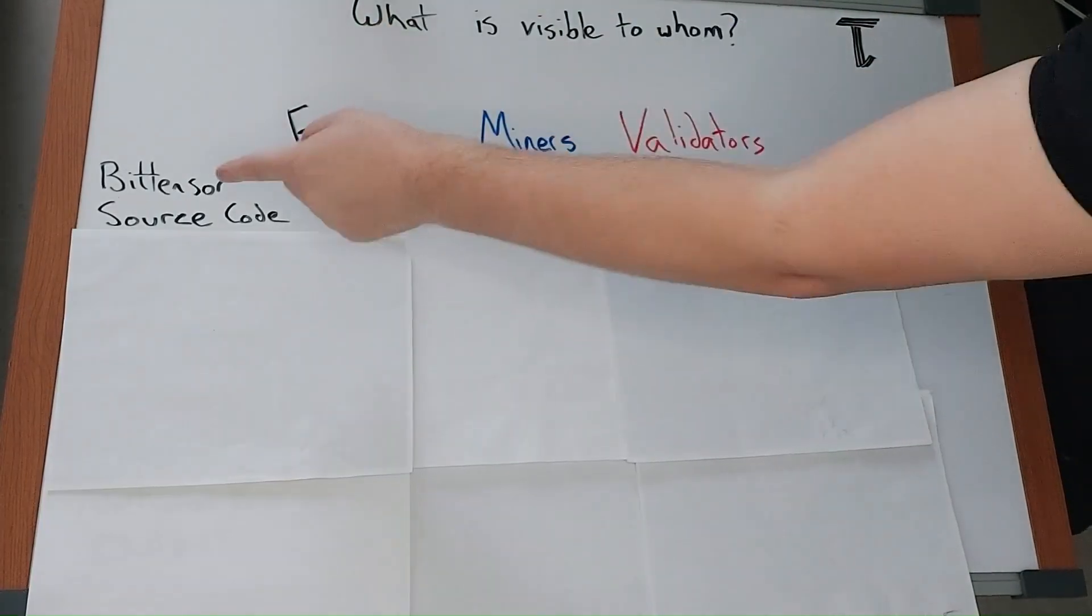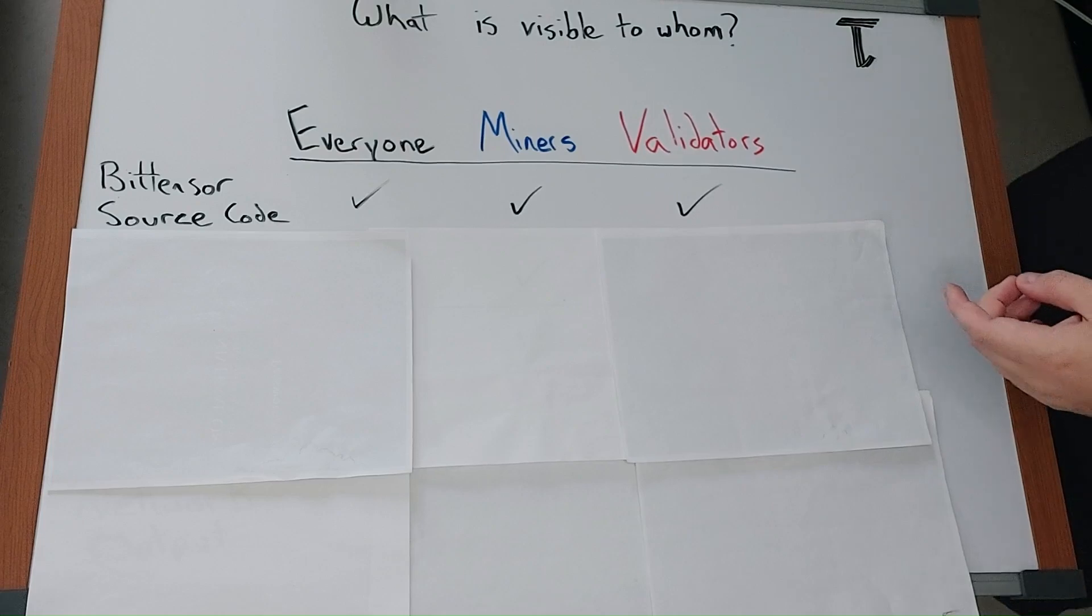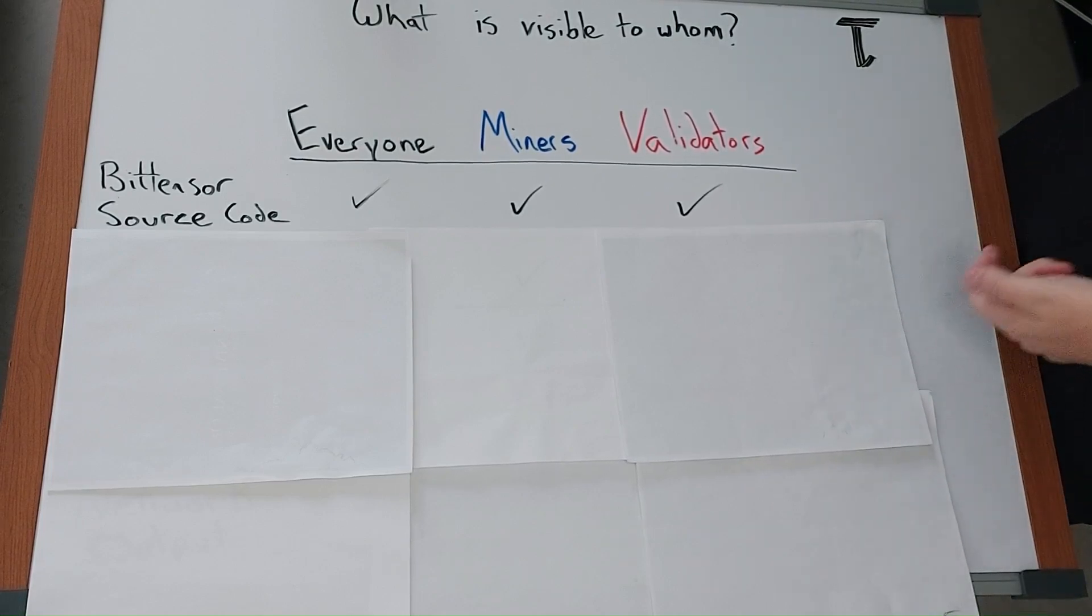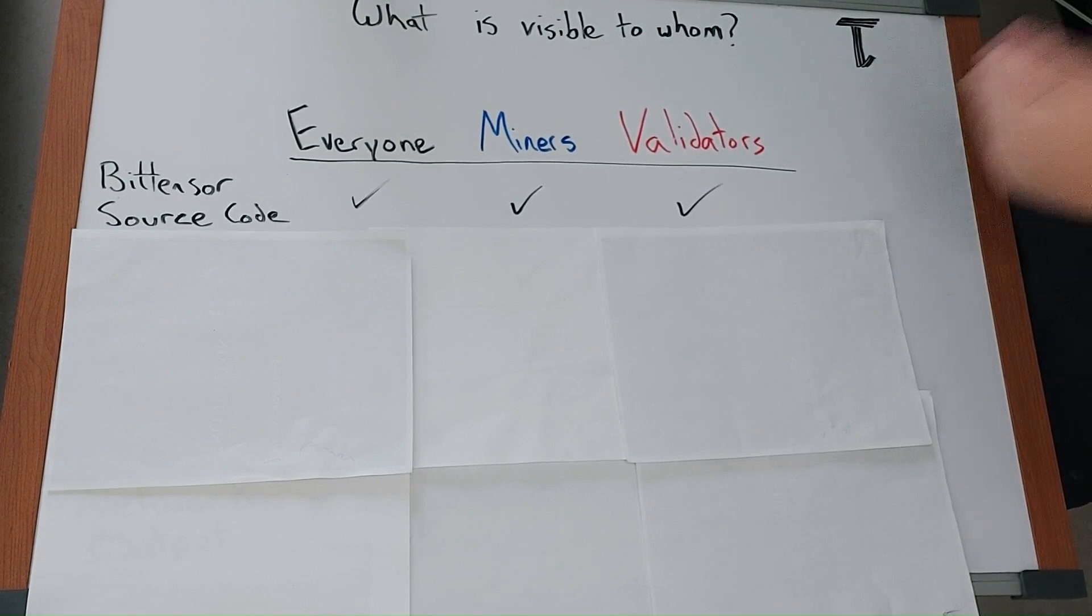First, let's talk about the BitTensor source code. The core BitTensor code is MIT licensed, meaning it can be copied and sold with no restrictions. This is about as free as you can get.